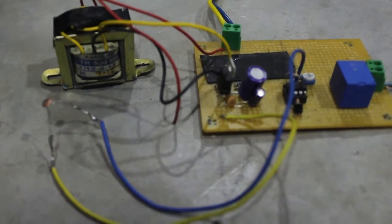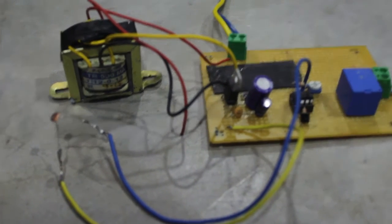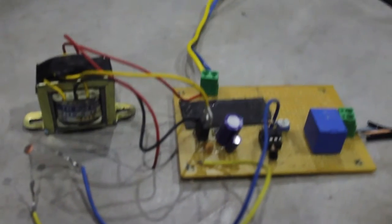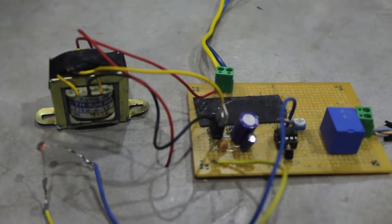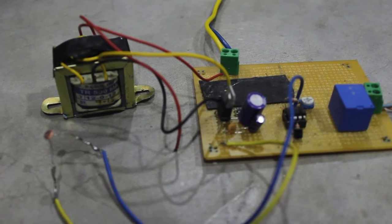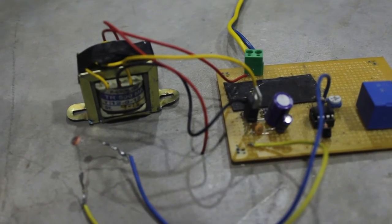Now how it works? Let us see. The transformer is used to convert 230 volt AC to 12 volt AC. And now we have a rectifier circuit which will convert the 12 volt AC to 5 volt DC. To know more about the rectifier circuits, you can watch our tutorial 1.